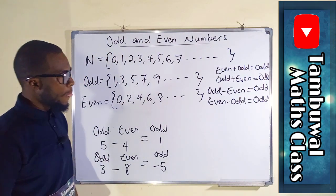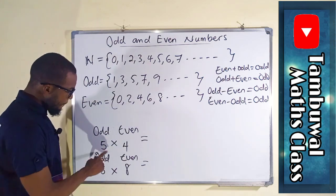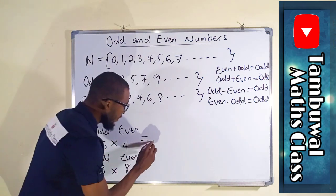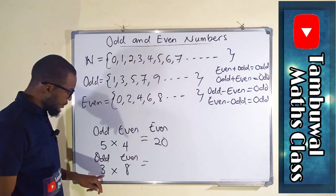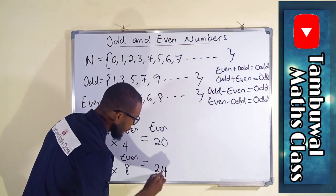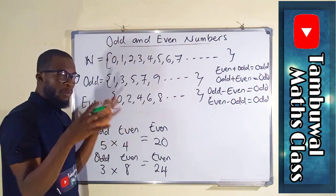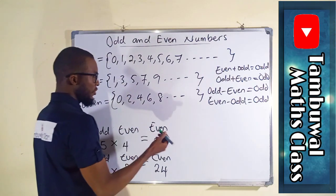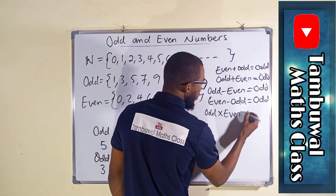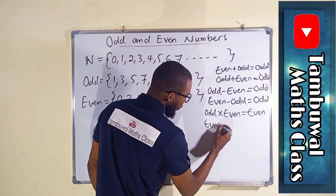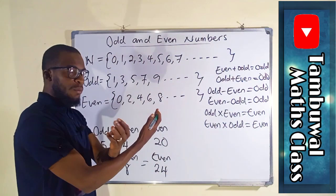Now let us take multiplication. If we multiply these numbers together: 5 times 4 is 20, and 20 is divisible by 2, so this is an even number. 3 times 8 is 24, and 24 is divisible by 2, so this is even. So any number you pick from these two sets and multiply them together, you will get an even number. Therefore, odd times even equals even, and even times odd is still even because they are commutative — you can interchange them and multiply and get the same result.